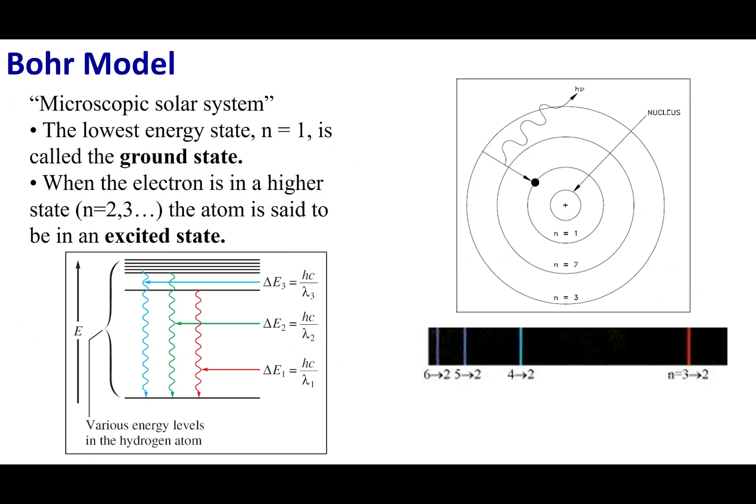When we last talked about our atomic model, we talked about Rutherford. He said the nucleus is at the center — a positive center with protons and neutrons making up this dense nucleus — and the electrons are around the nucleus. Now we're going to talk about the Bohr model. Bohr says that because of this line spectrum from hydrogen, the atom is quantized.